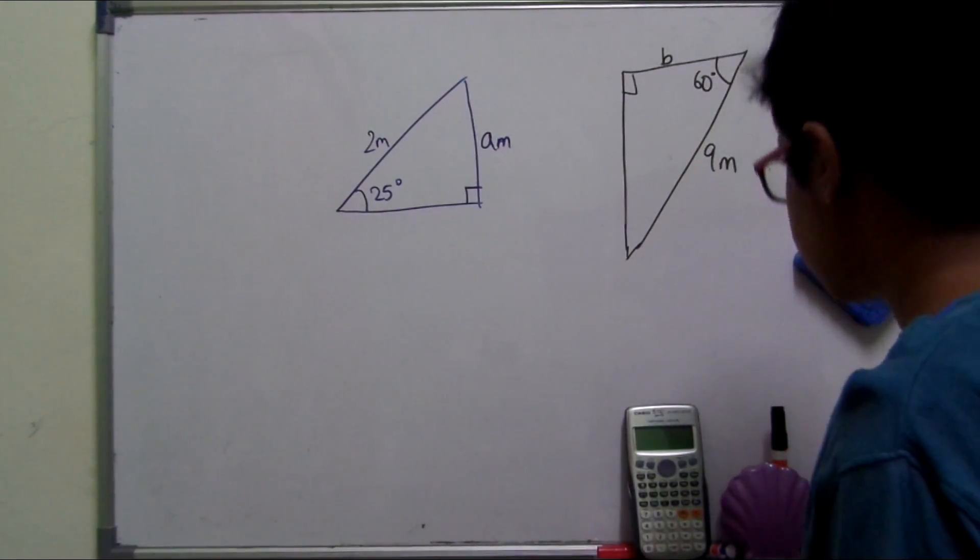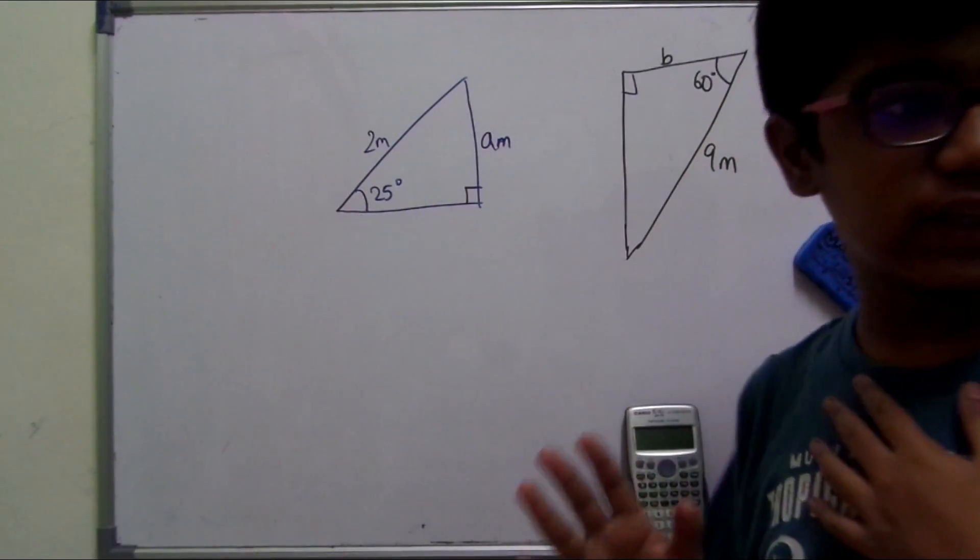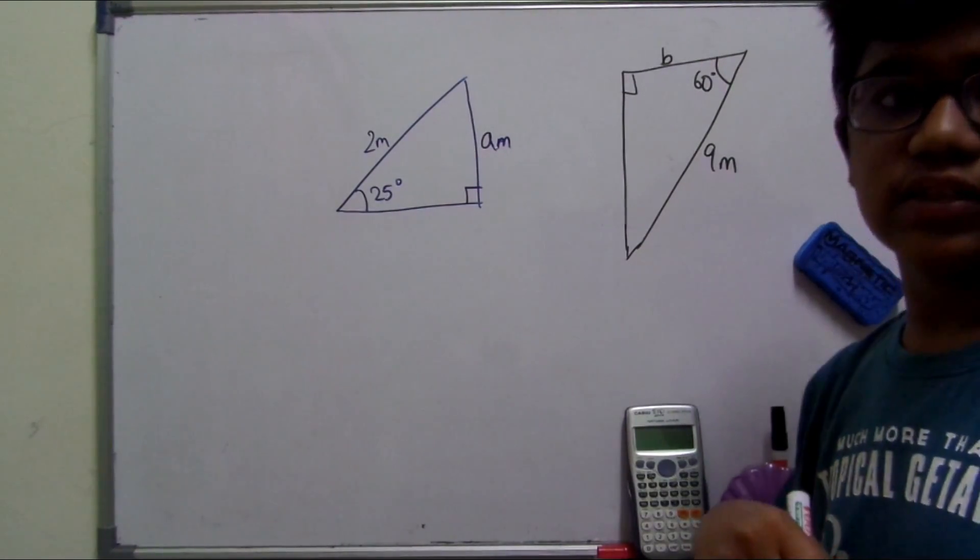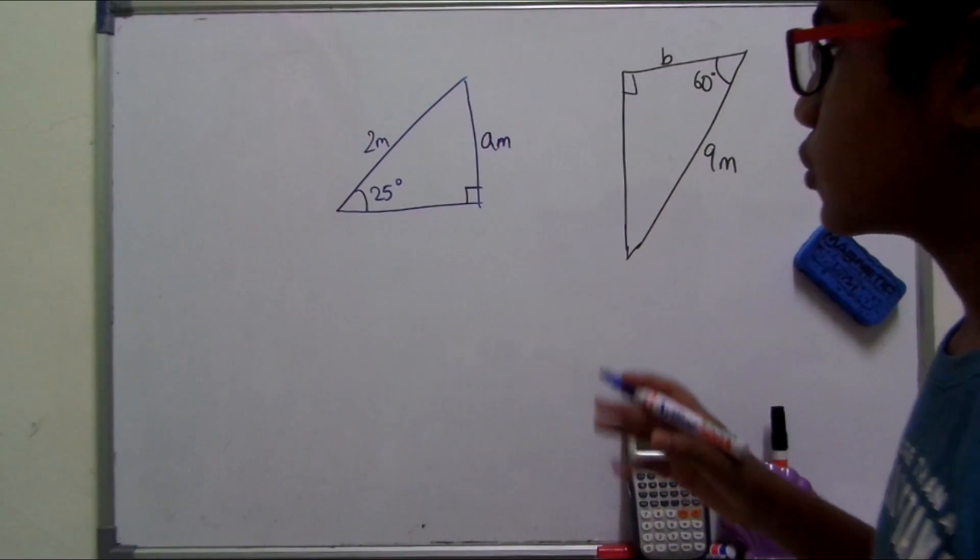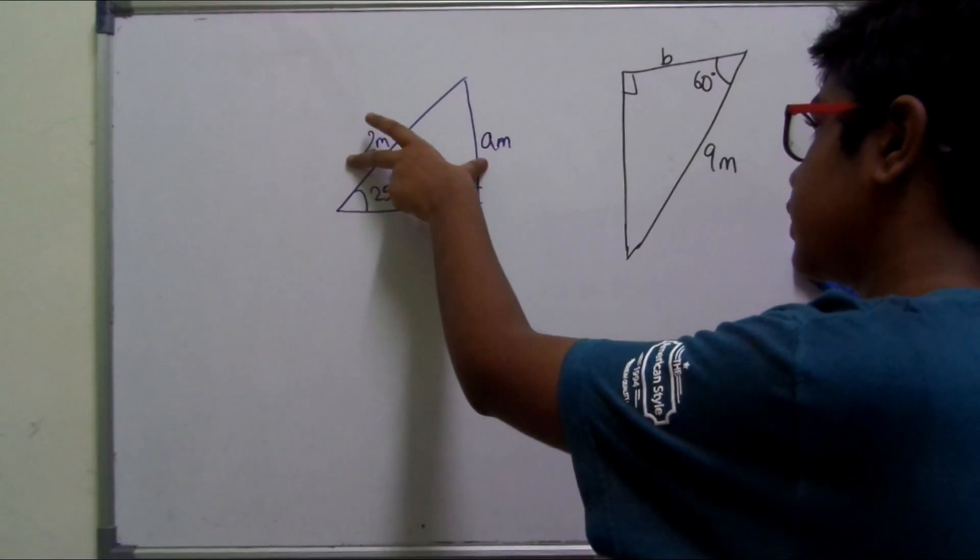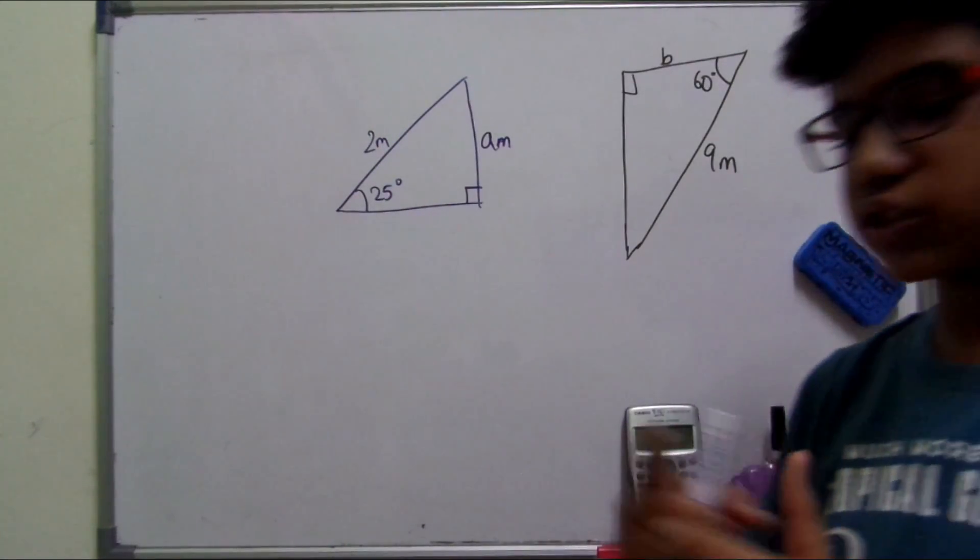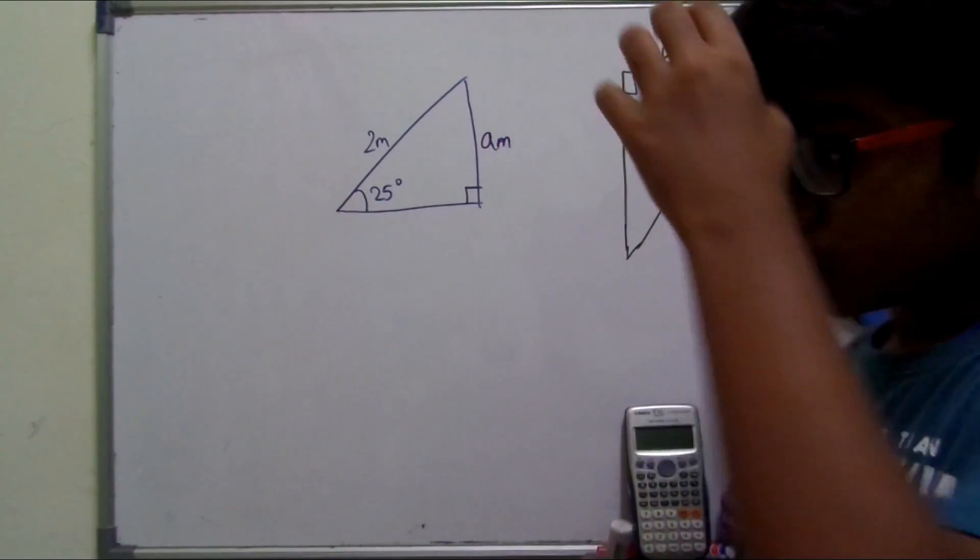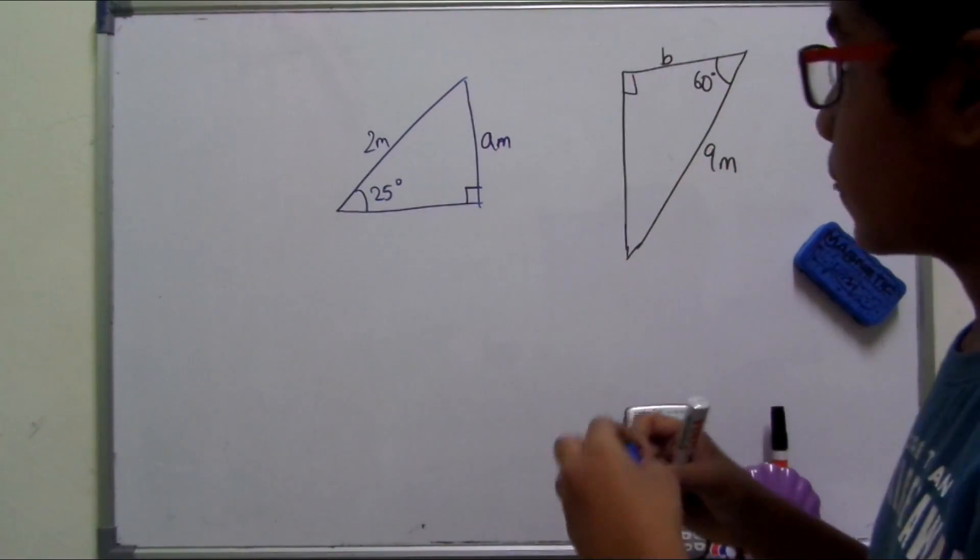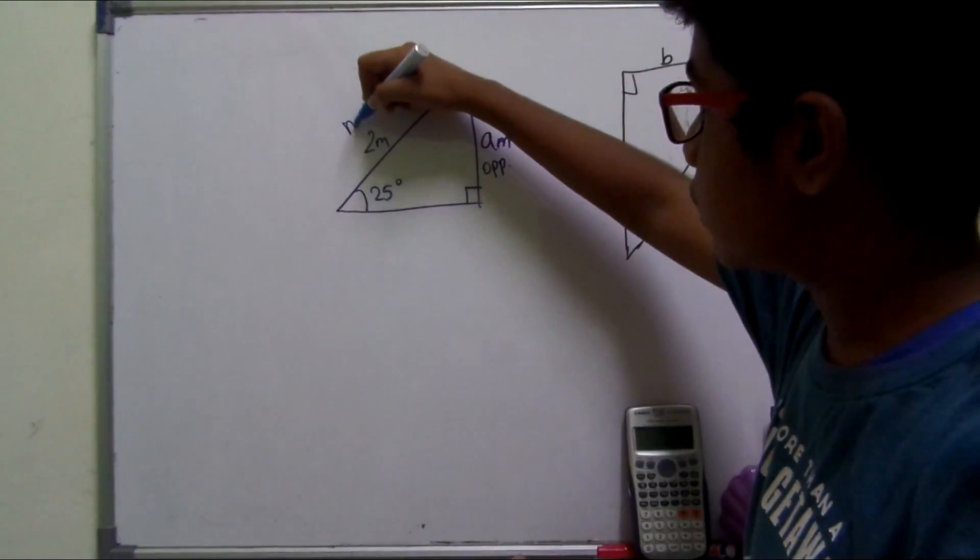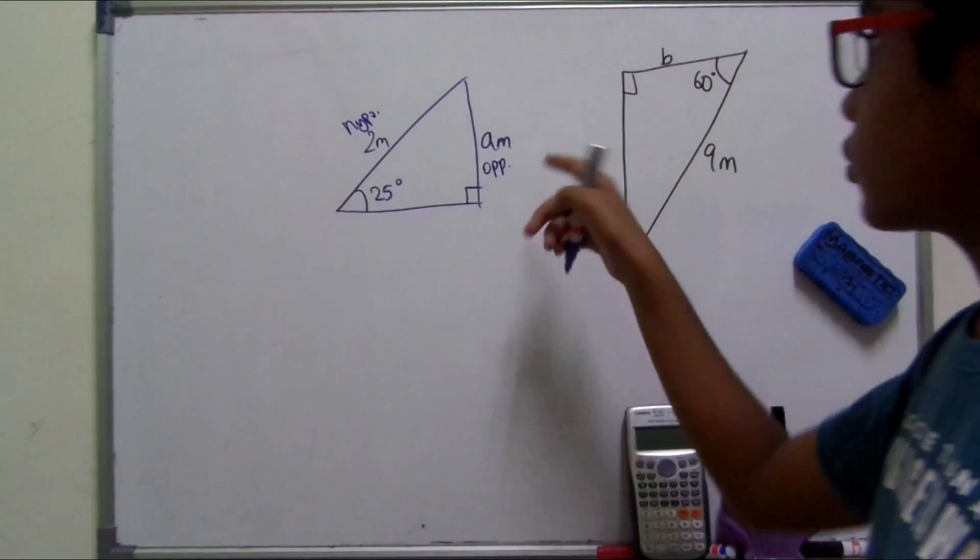Over here, the first step to solving a problem like this is to use trigonometry. Trigonometry comes in really handy when you are using these sorts of problems. We need to find out what values are given and which sine, cosine, or tangent uses these two values. So we need to identify them first. This is the opposite, 2 m, and that is the hypotenuse because it is opposite to the right angle.